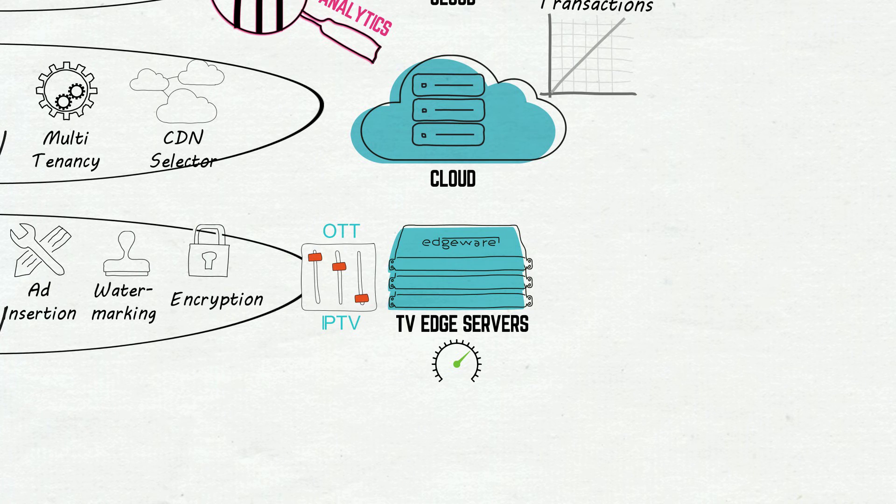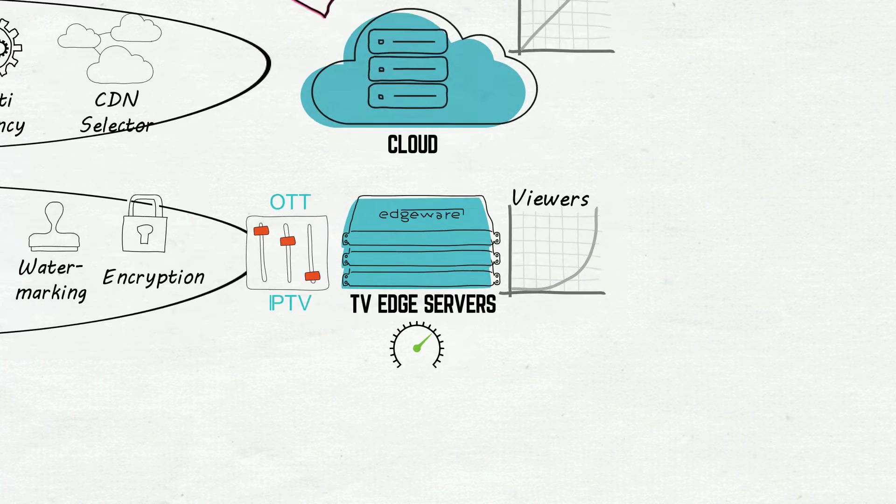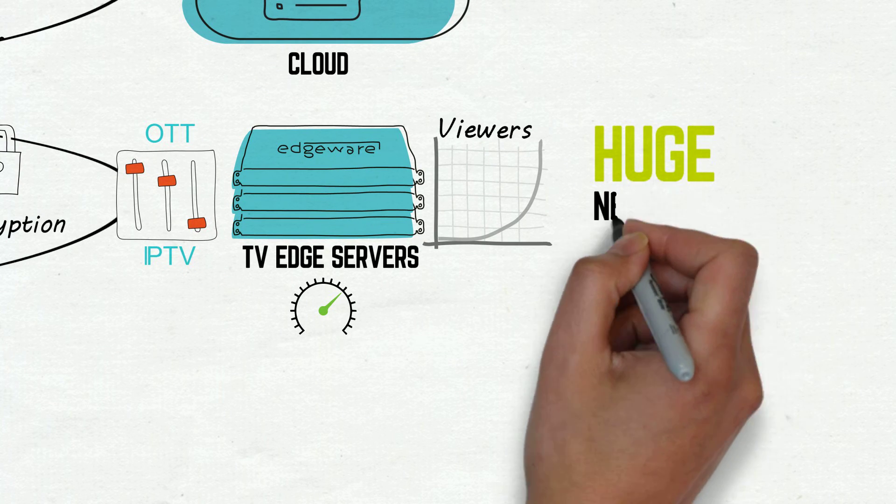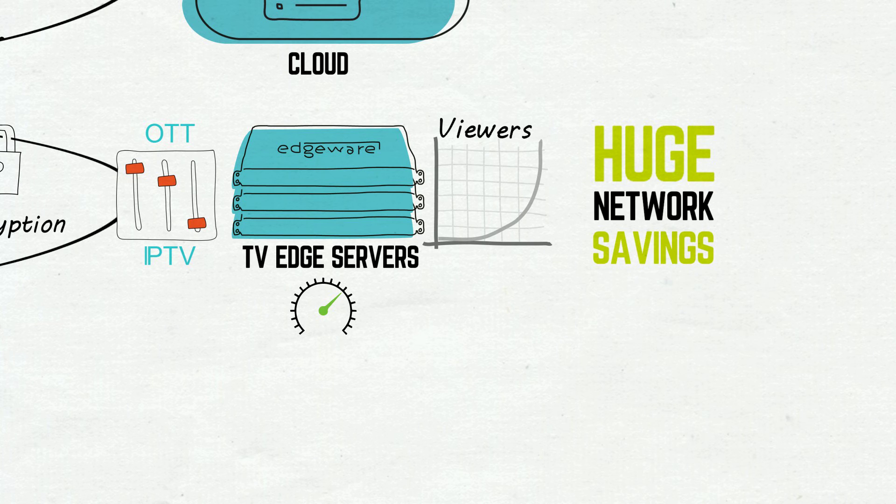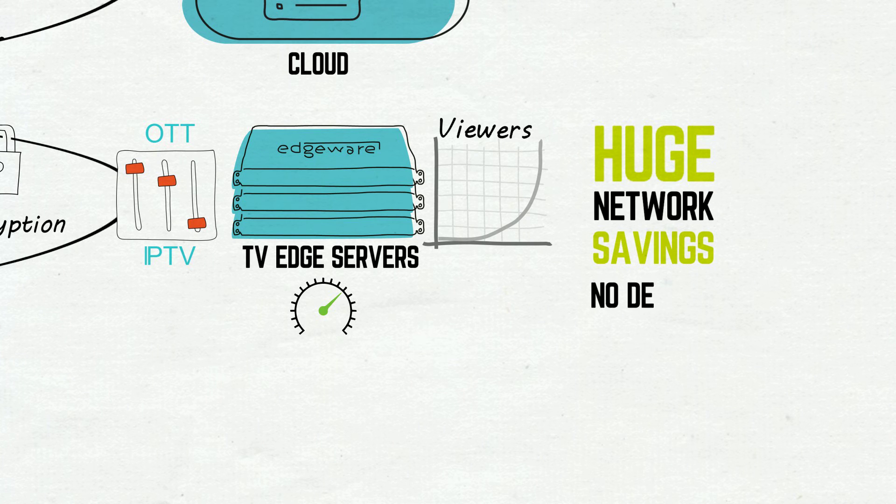Distributing the delivery layer means that you can scale to huge numbers of viewers and get massive network savings or lower your third-party CDN costs. It also means you can deliver TV with no delays, buffering or glitches.